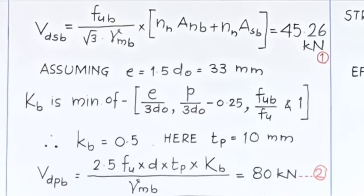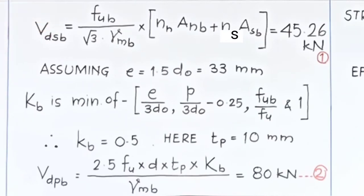The design shear strength of bolt is calculated as: VDSB = FUB / (√3 × γMB) × (NN × ANB + NS × ASB). Here FUB = 400, γMB = 1.25, NN = 1, ANB = 245 mm², NS = 0, so NS × ASB = 0. Dividing by 1000 to get kilonewtons, VDSB = 45.26 kN. This is the shear strength of the bolt.